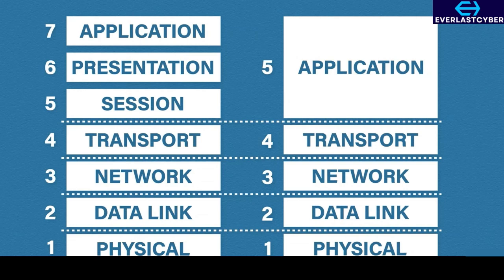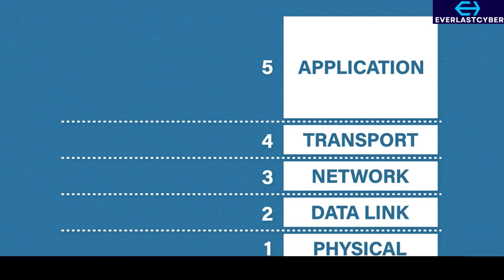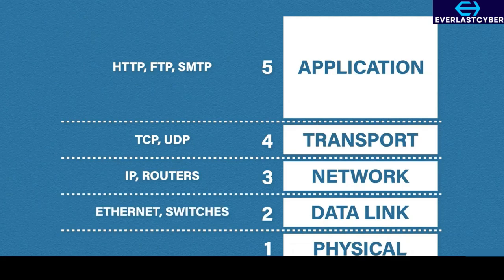Let's do a quick reminder about the protocols and devices at each layer. At the application layer, we have application protocols like HTTP, FTP, and SMTP. The two most common transport protocols are TCP and UDP. Port numbers are also added here. At the network layer, we have the internet protocol, or IP, and routers also operate at this layer. The data link layer contains Ethernet switches, although you can get layer 3 switches that have some routing capabilities. Finally, we have the physical layer — think of it as everything we can touch and feel, things like cables and network interface cards.